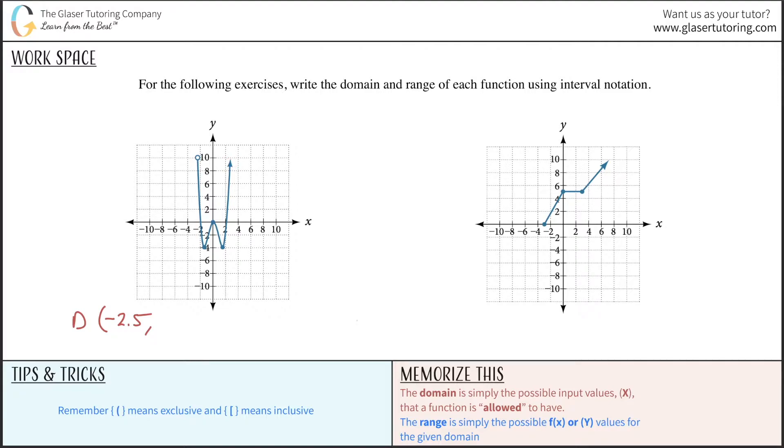Now, notice there's an arrow here, which means this graph continues on forever, and it's going to be continuing on forever at a little bit of an angle there. So it's tough to tell, but if you imagine this line continuing on forever, it's going to continue on forever, therefore, in the x direction.